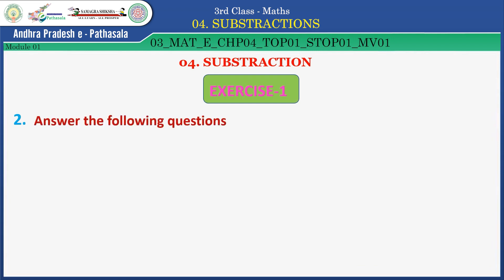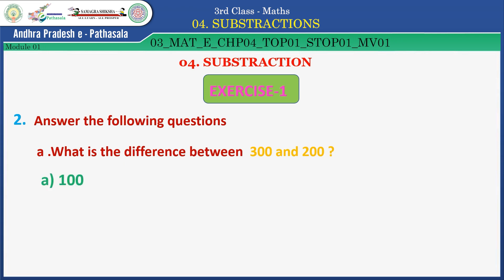Second: answer the following questions. Question A: what is the difference between 300 and 200? Option A: 100. Option B: 300. Option C: 400. Read once more — 300 minus 200. We have to do minus operation: 300 minus 200. The answer is A — 100. Super, children.